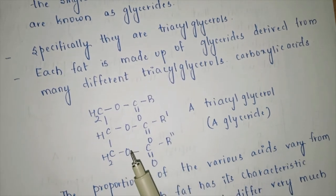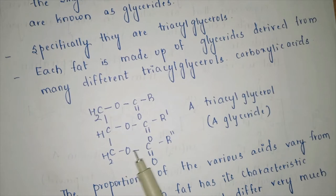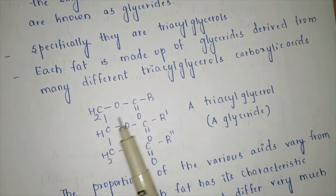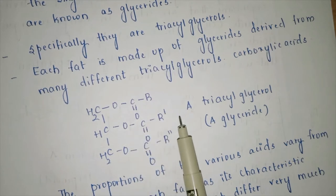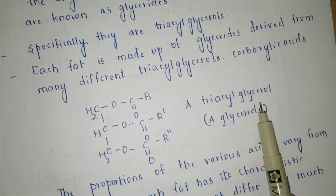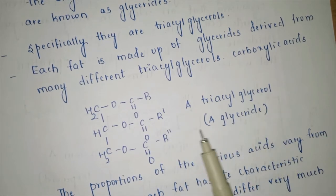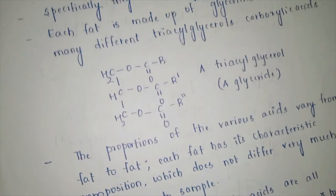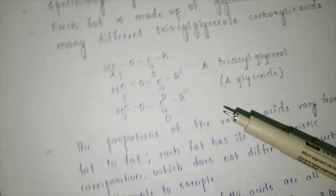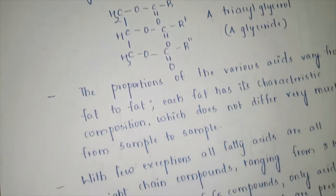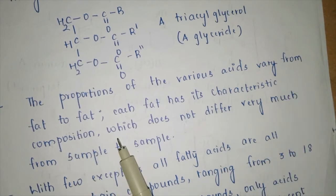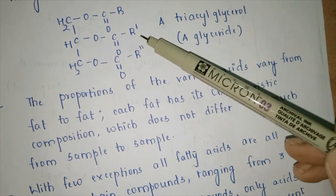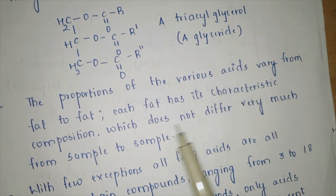Triacylglycerol means the fatty acid has been converted to its respective ester. The CH₂OH alcoholic groups are converted to esters, hence the system is called triacylglycerol or glyceride. Here R, R', and R'' can be the same or different from one another. The proportions of various acids may vary from fat to fat — we can change R, R1, R2, and so on.